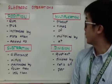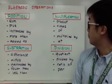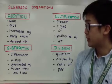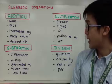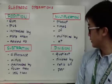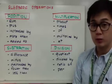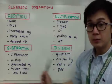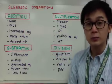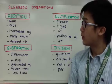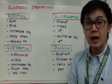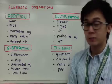For multiplication, the associated words are: product, times, of, multiplied by, and at. For subtraction, we have: difference, minus, decreased by, fewer than, and less than. For division, we have: quotient, divided by, ratio of, and per. If you remember all these words, you will recognize them in algebraic expressions or word problems in algebra, and you'll be able to understand how to solve those problems.